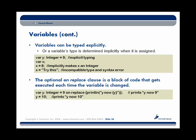Variables can be typed explicitly, but they don't have to be. For example, I can define variable Y as being of type integer and assign it an initial value of 9 — that's explicit typing. However, I can define a variable X with no type and no initial value; it's not until the initial value is assigned that the type gets assigned. This is what makes JavaFX statically typed at compile time, making it a bit different than Java.